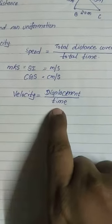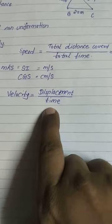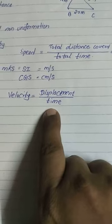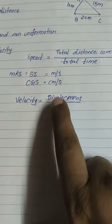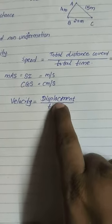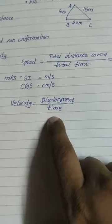Now see velocity. Velocity is the distance covered by the body in a given direction in unit time, or displacement upon time. Displacement in a meter and time in a second.